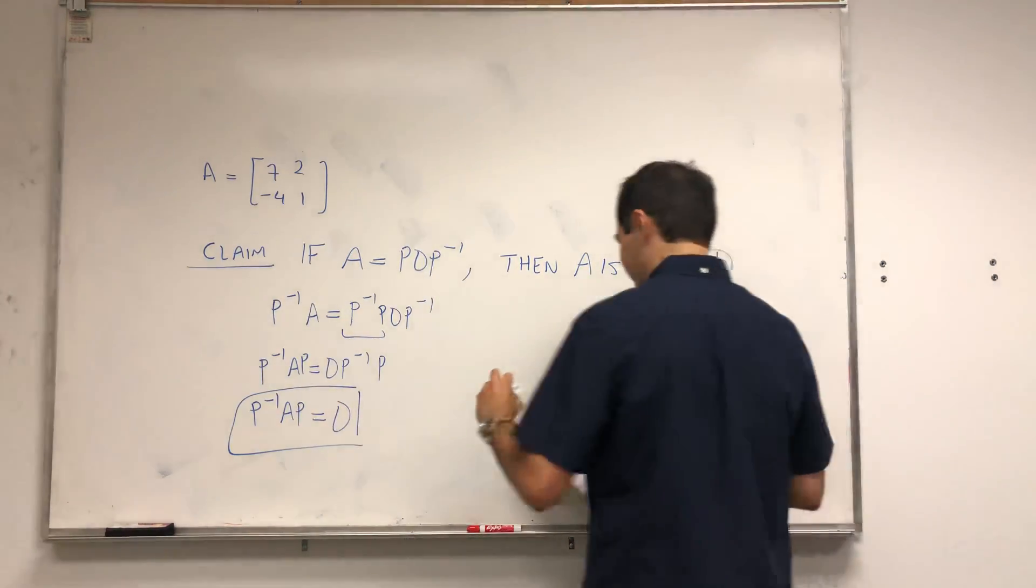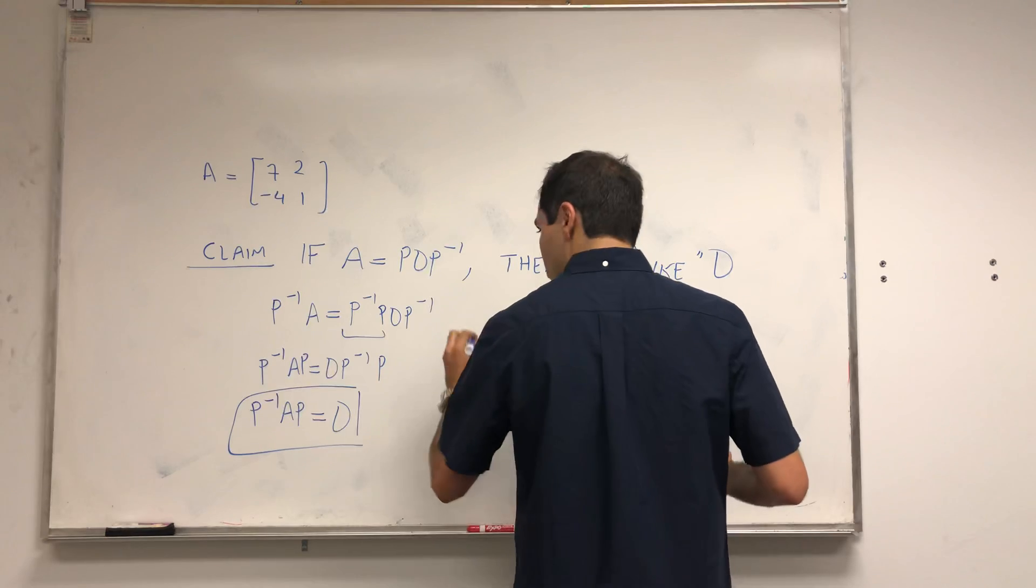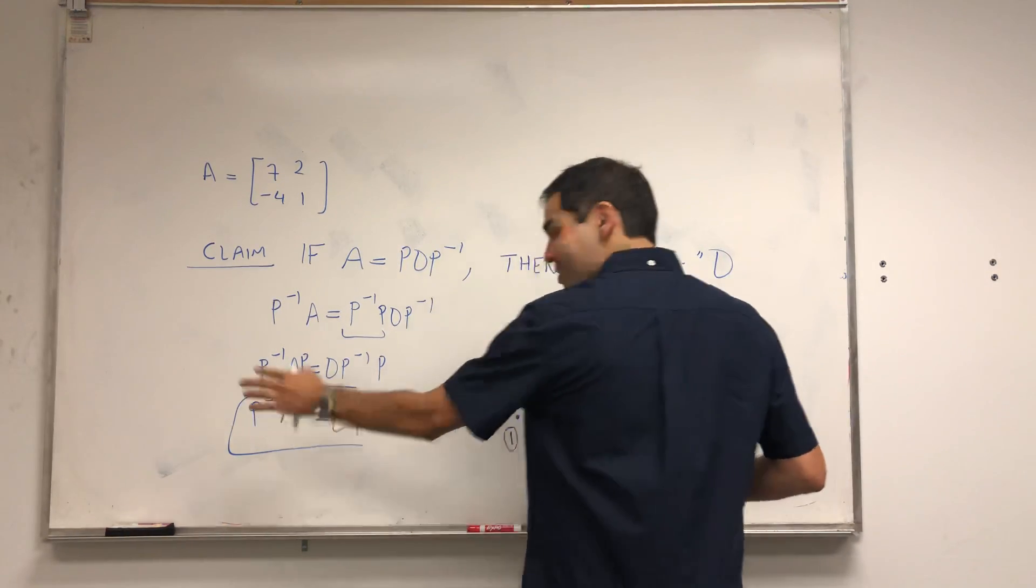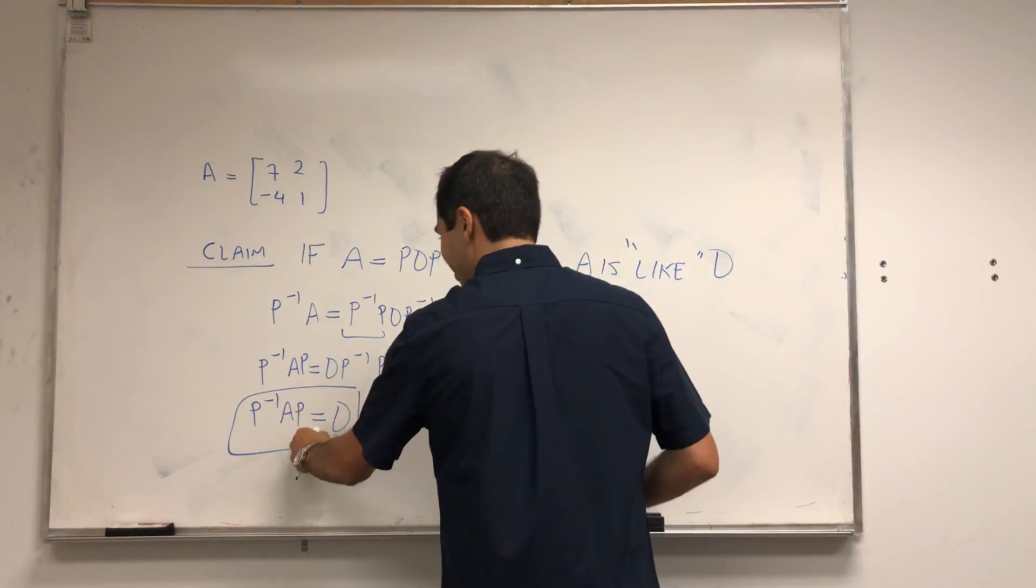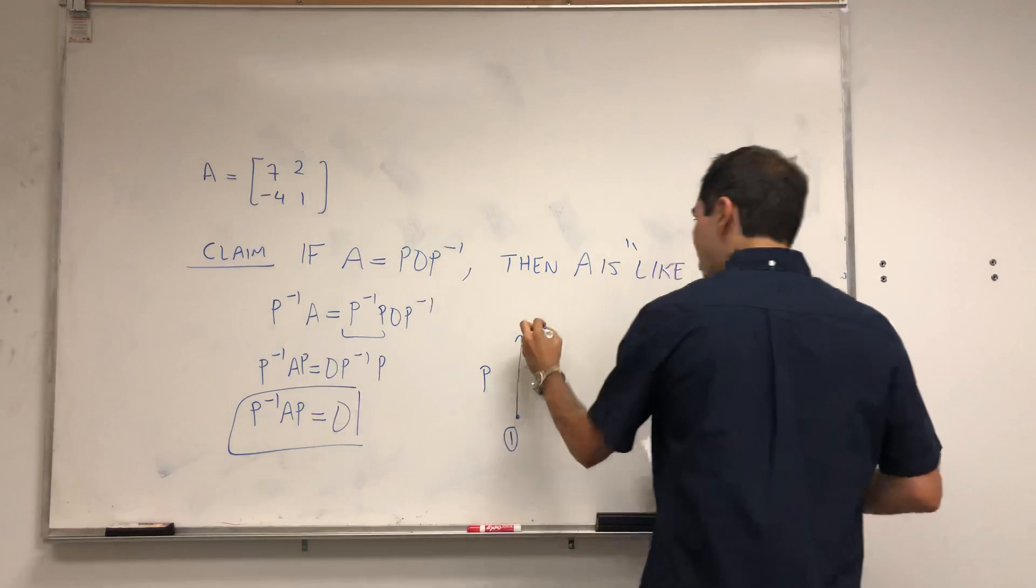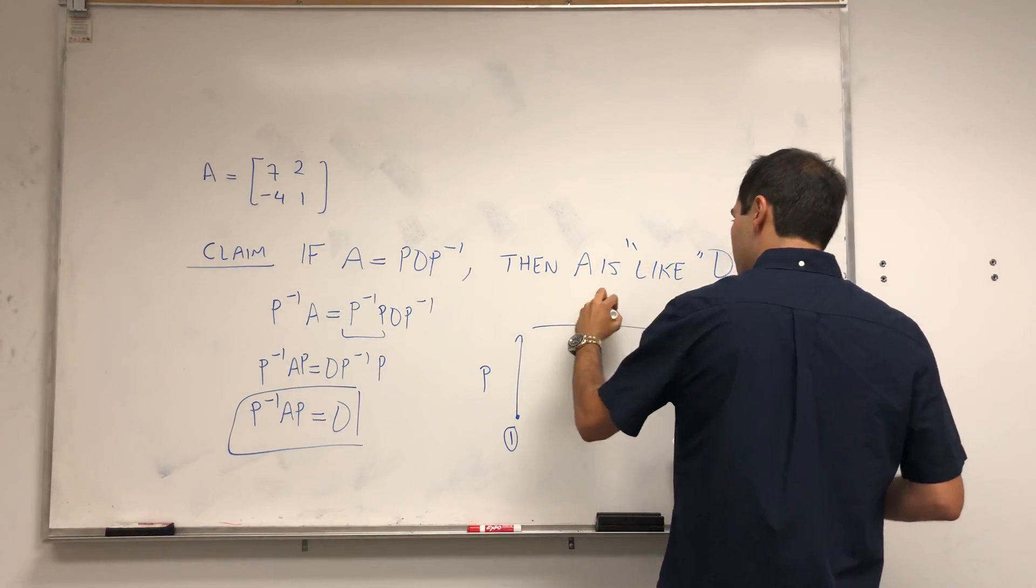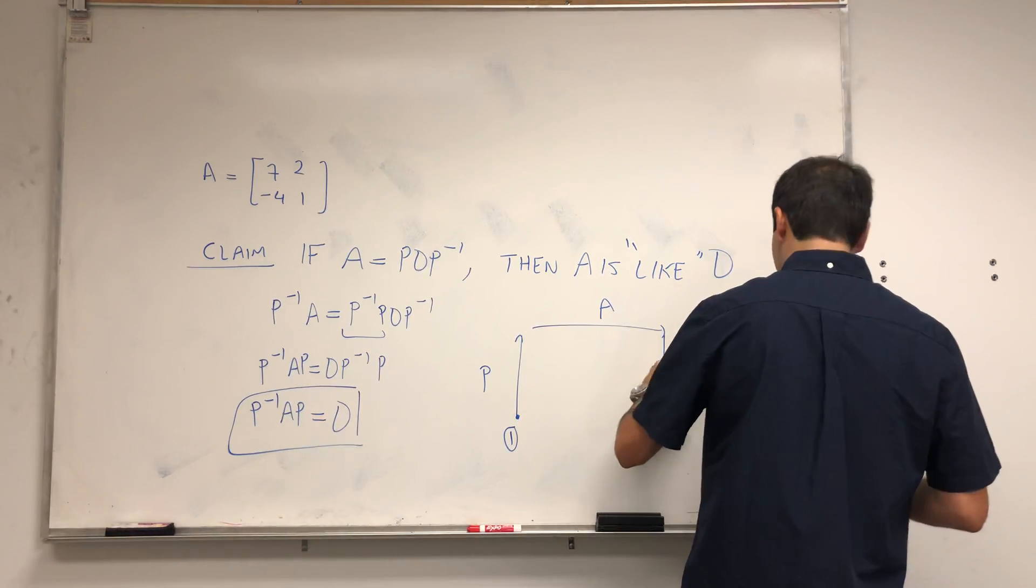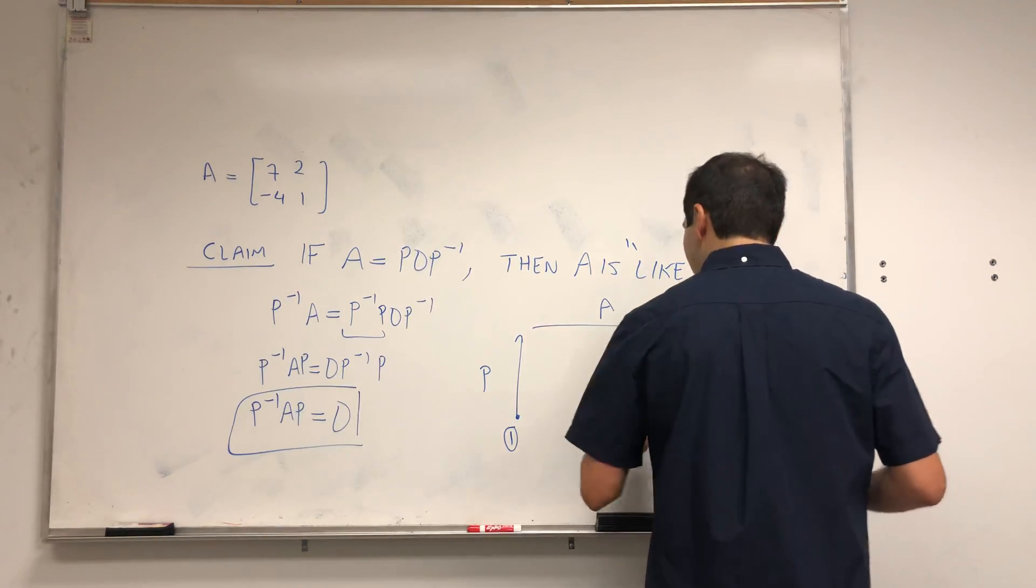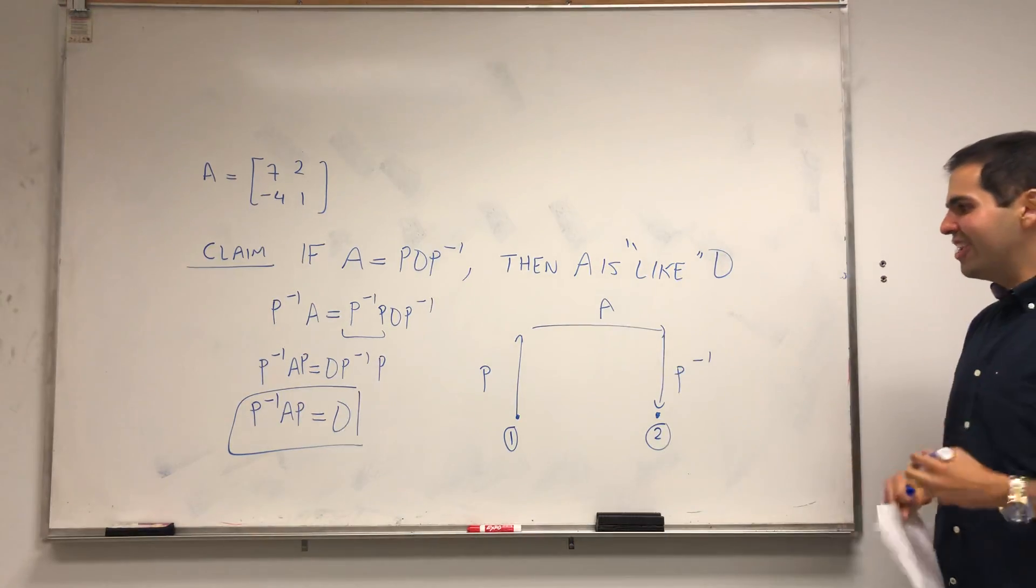And what does that mean? Suppose you start with location one. And in math you read stuff from right to left, like for composition. So first you apply P, and then you apply A, and then you undo it by applying P inverse. And we arrive at some other location two.